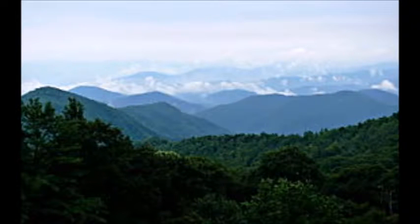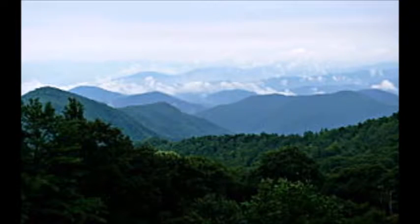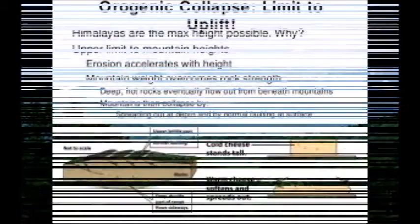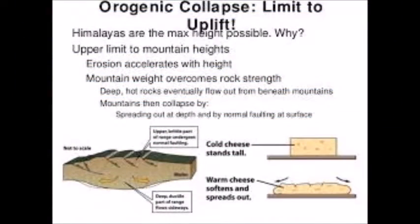There are two types of volcanic arcs: island arcs and continental volcanic arcs — VIA and CVA. Collisions of two continental plates produce folding and mountain arcs.